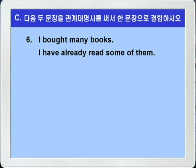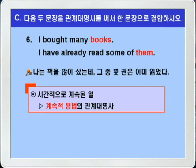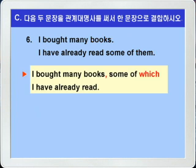벌써 6번입니다. I bought many books. I have already read some of them. 나는 많은 책들을 샀다. 나는 그 책들 중 몇 권을 이미 읽었다. 두 문장에서 공통되는 것을 찾아보면 many books의 books와 some of them의 them이 서로 공통이죠. 따라서 many books를 선행사로 하는데 book이 사물이니까 some of them을 some of which로 바꿔서 연결시키면 됩니다. 문맥상 계속적 용법으로 연결시켜야 하므로 I bought many books, some of which I have already read.